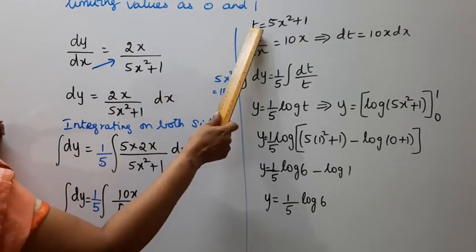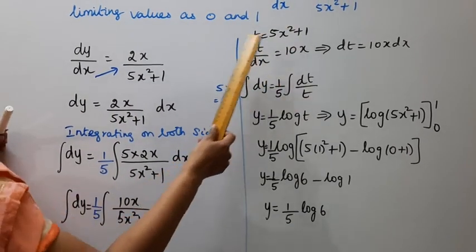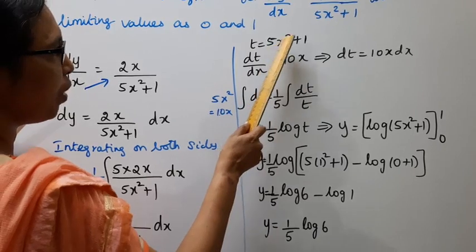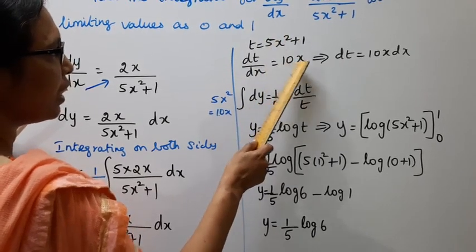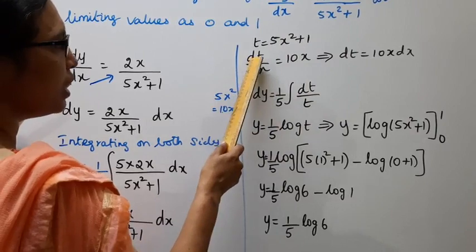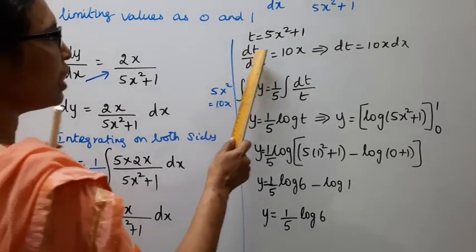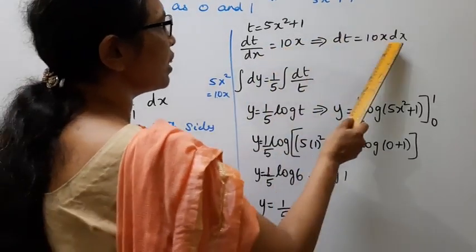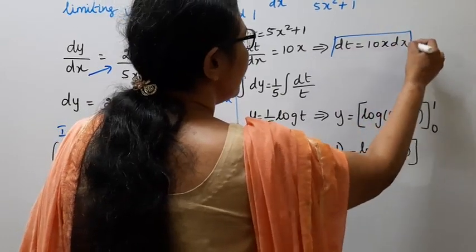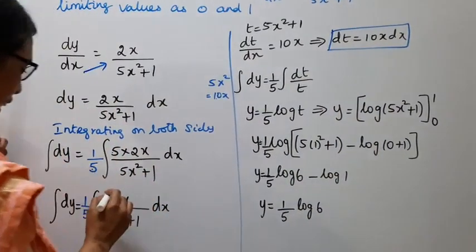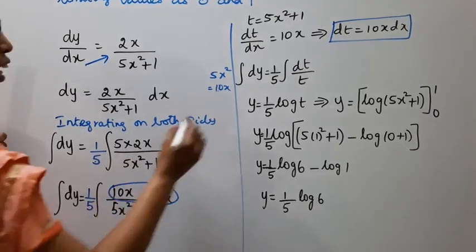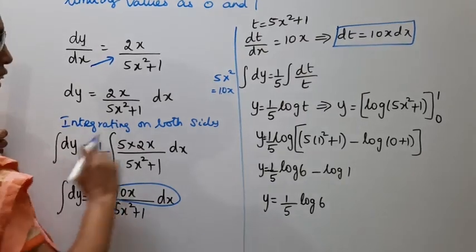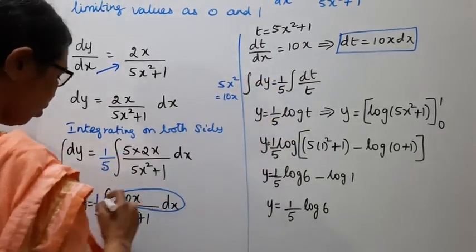The denominator is 5x squared plus 1. Let t equal to 5x squared plus 1. Differentiating with respect to x: 5 times 2 is 10x, and 1 differentiates to 0, so dt equals 10x dx. Therefore dx equals dt divided by 10x. Here we have dt equal to 10x dx.